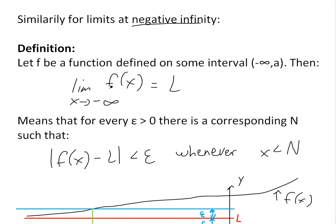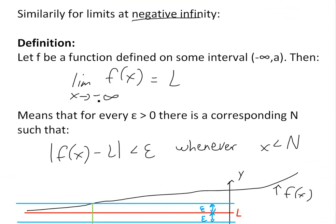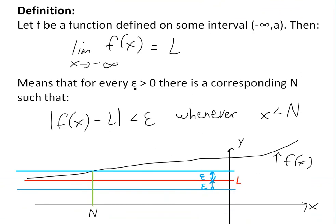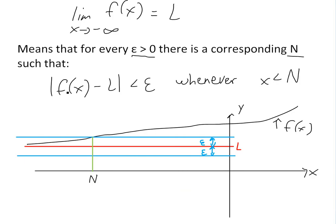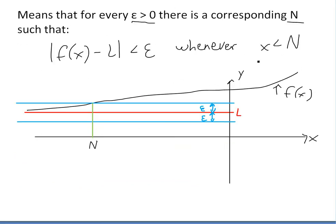Then the limit as x approaches negative infinity of f(x) equals L. This means that for every epsilon greater than zero, there is a corresponding number N such that the absolute value of f(x) minus L is less than epsilon. But now the slight difference is x is less than N, rather than x greater than N.